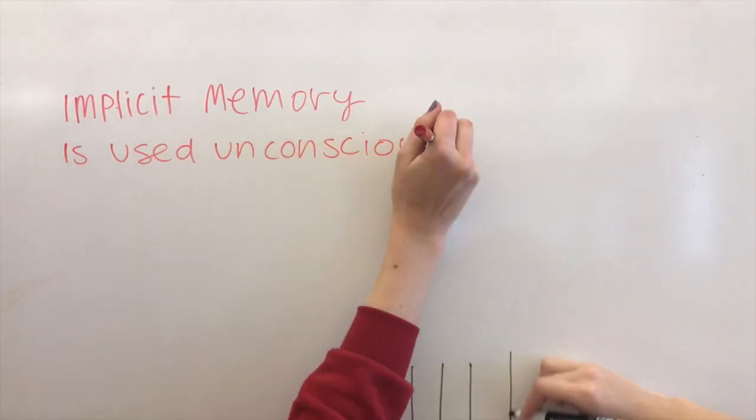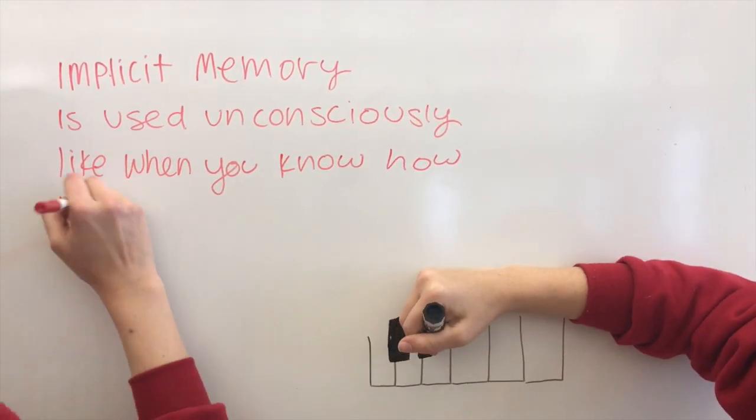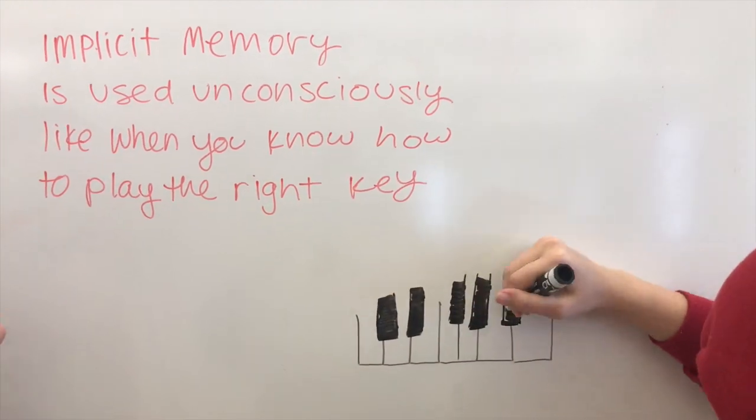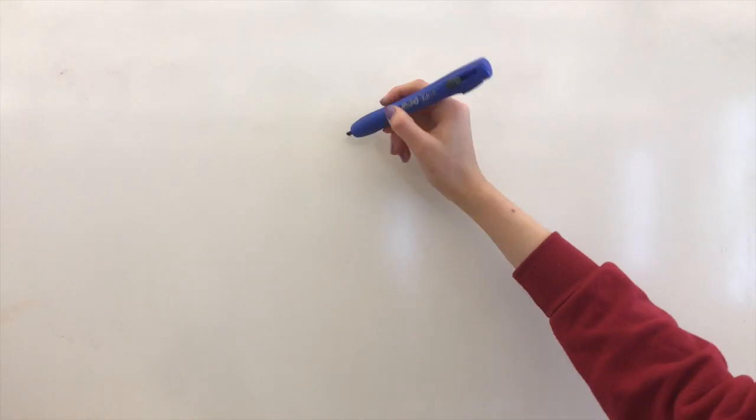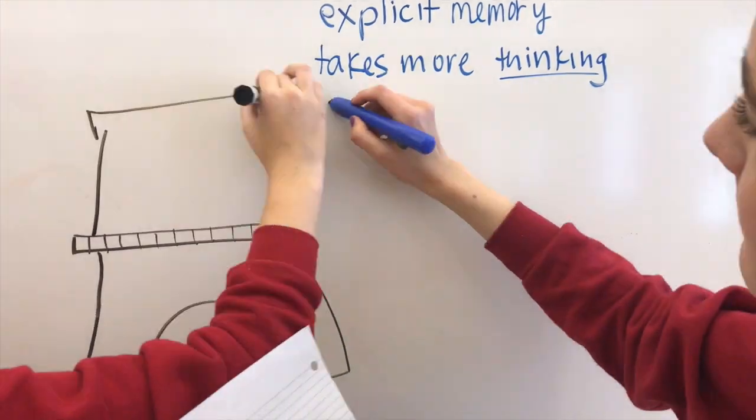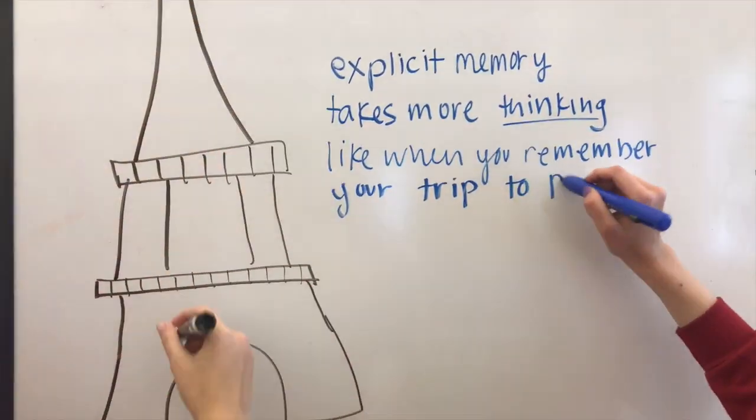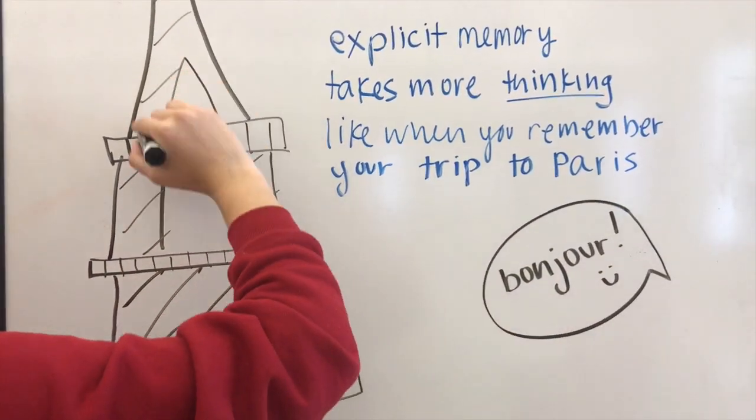Implicit memory we use unconsciously, like when you have to play the right key. Explicit memory takes more thinking, like when you remember your trip to carry.